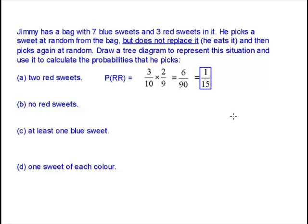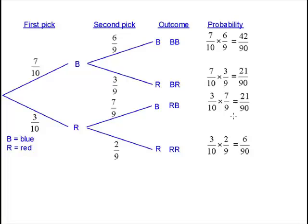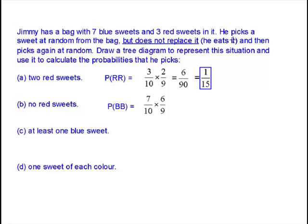No red sweets. Well, no red sweets means that they're both blue. So it's this top situation. BB 42 ninetieths, which cancels to 7 fifteenths.